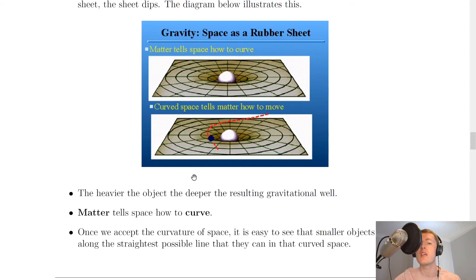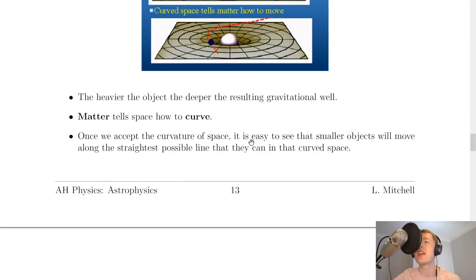We can also conclude, however, that curved space tells matter how to move. Because once that large mass in the centre has caused the warping of space-time around it, then other masses passing nearer that larger mass and nearer the resulting gravitational well will be pulled in towards it. So in a sense, this matter that is already there tells the space how to curve around it.